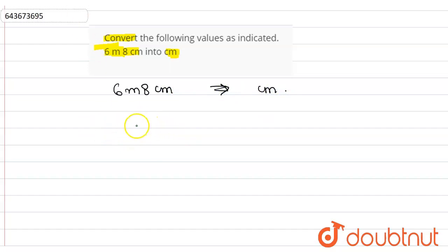So first of all, we know one meter is equal to hundred centimeter. This means six meter will be equal to six into hundred, which is equal to 600 centimeter.